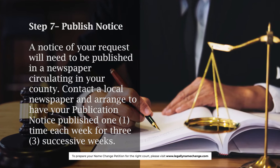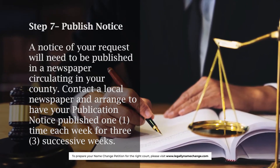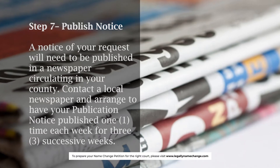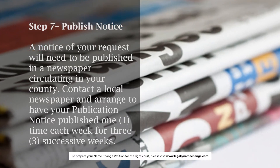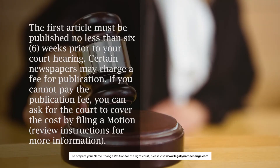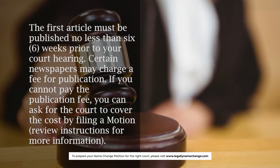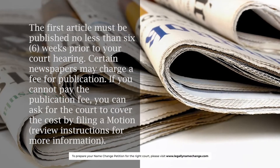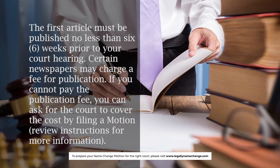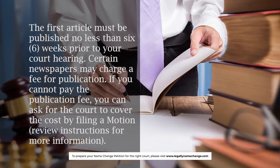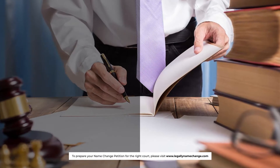Step 7: Publish notice. A notice of your request will need to be published in a newspaper circulating in your county. Contact a local newspaper and arrange to have your publication notice published one time each week for three successive weeks. The first article must be published no less than six weeks prior to your court hearing. Certain newspapers may charge a fee; if you cannot pay, you can ask the court to cover the cost by filing a motion.